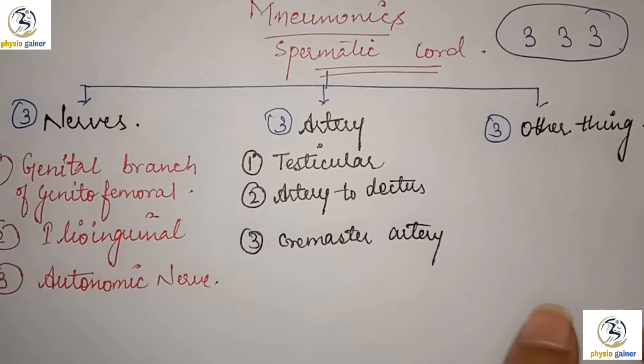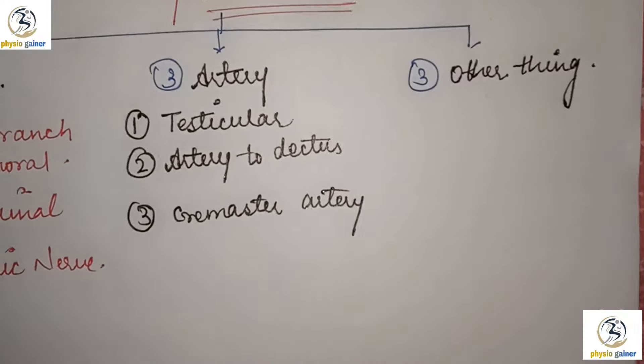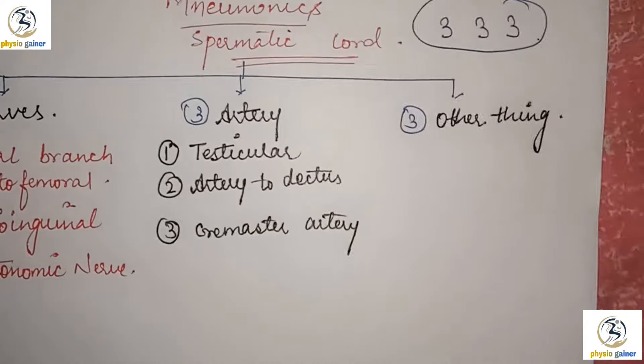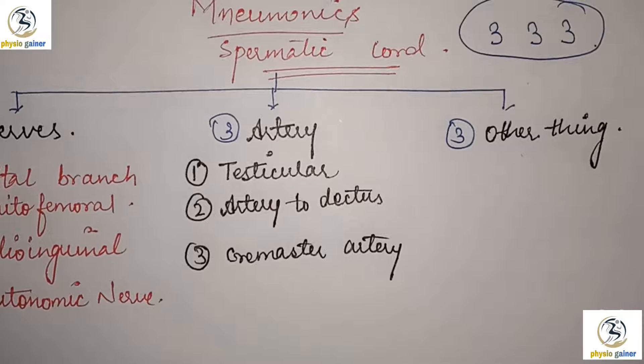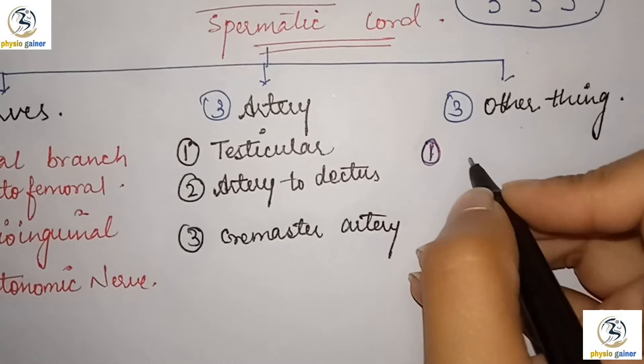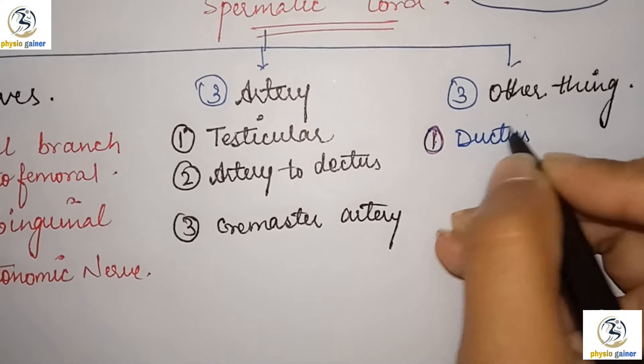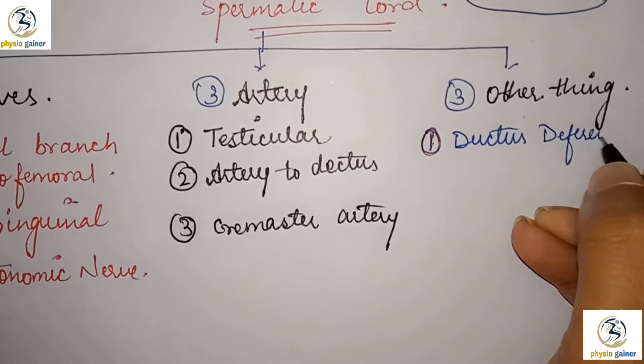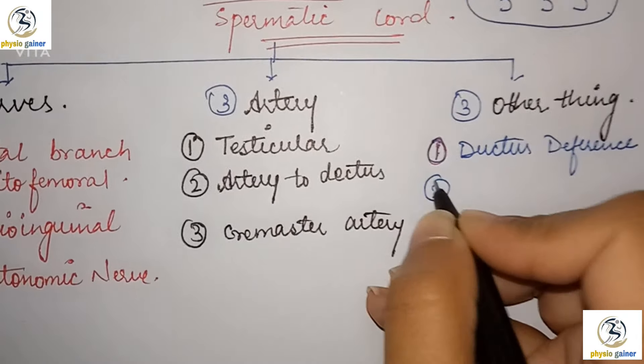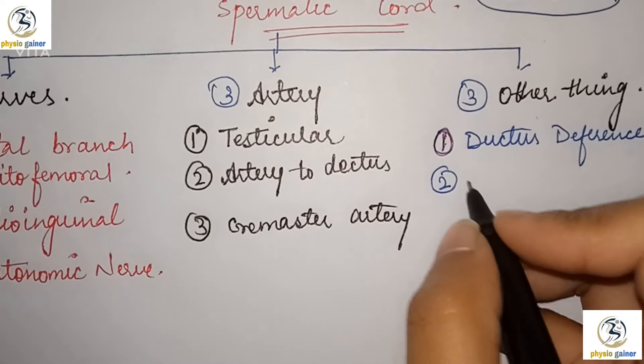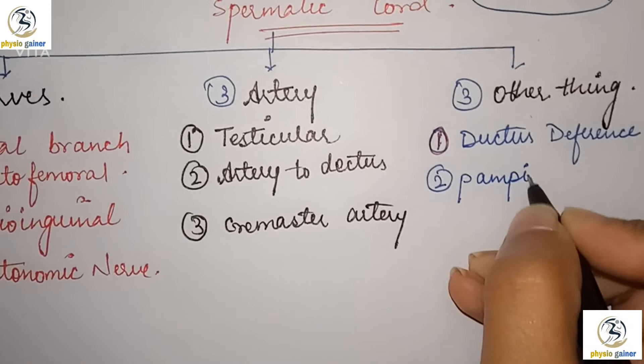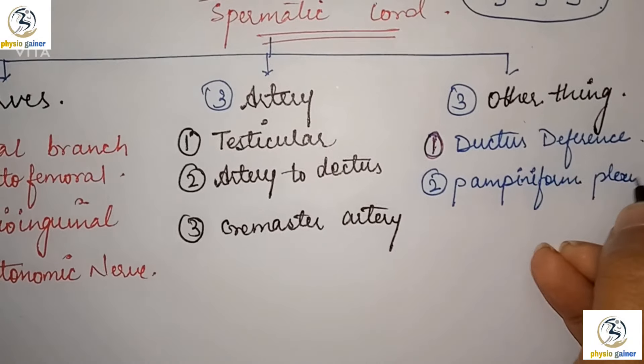The third is the other things. First is ductus deferens. Second is pampiniform plexus.